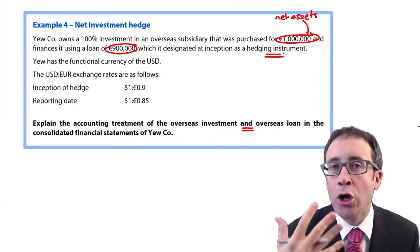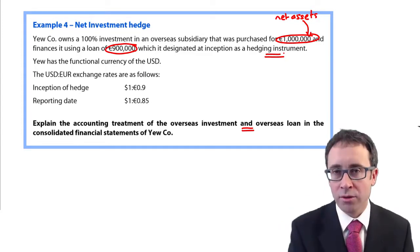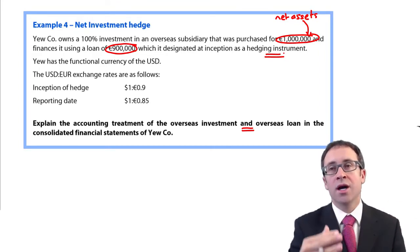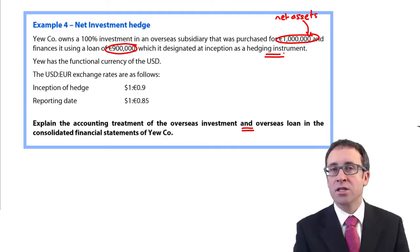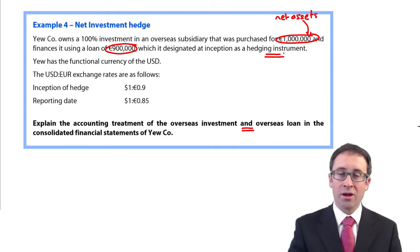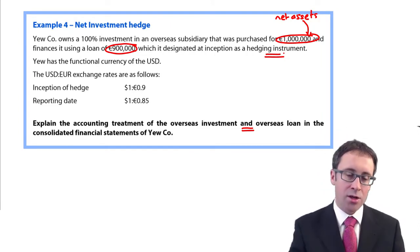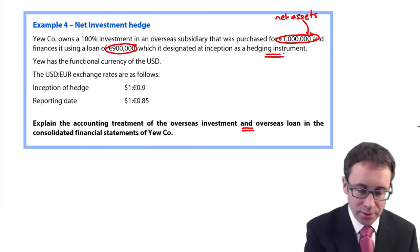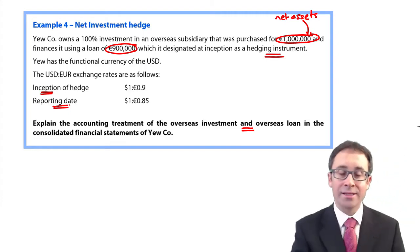An overseas loan is a monetary item, and gains and losses on it normally go through profit or loss. But if it's designated as a hedging instrument, they go to OCI to match up the gains and losses on the item. The functional currency here is the US dollar, so that will also be the presentation currency, and we have two different exchange rates — one at inception and one at the reporting date.